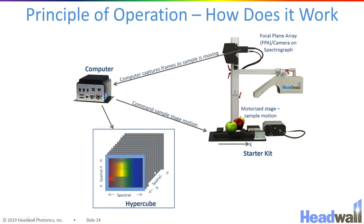That data cube is graphically shown down here. We can see that the image on the focal plane has the spectral axis in one dimension and the spatial axis in the other dimension. These are showing all of the different snaps of the focal plane as we are moving past the scene.